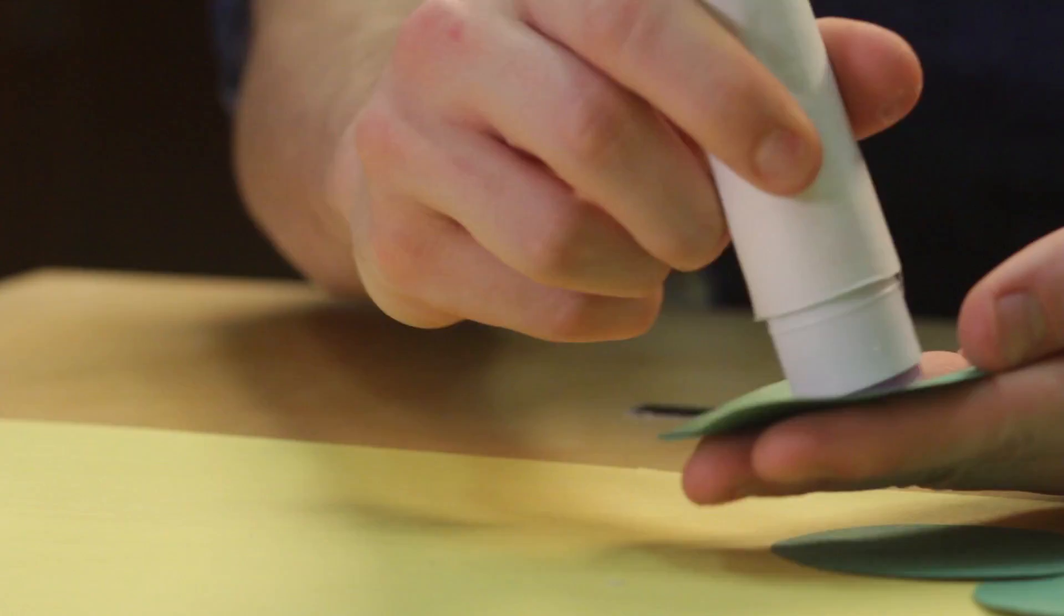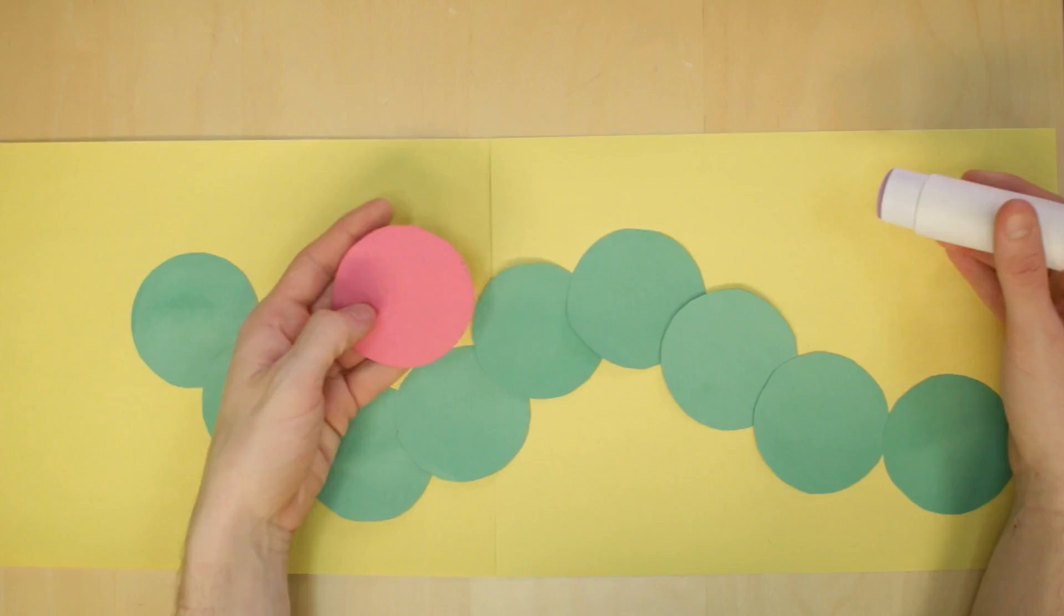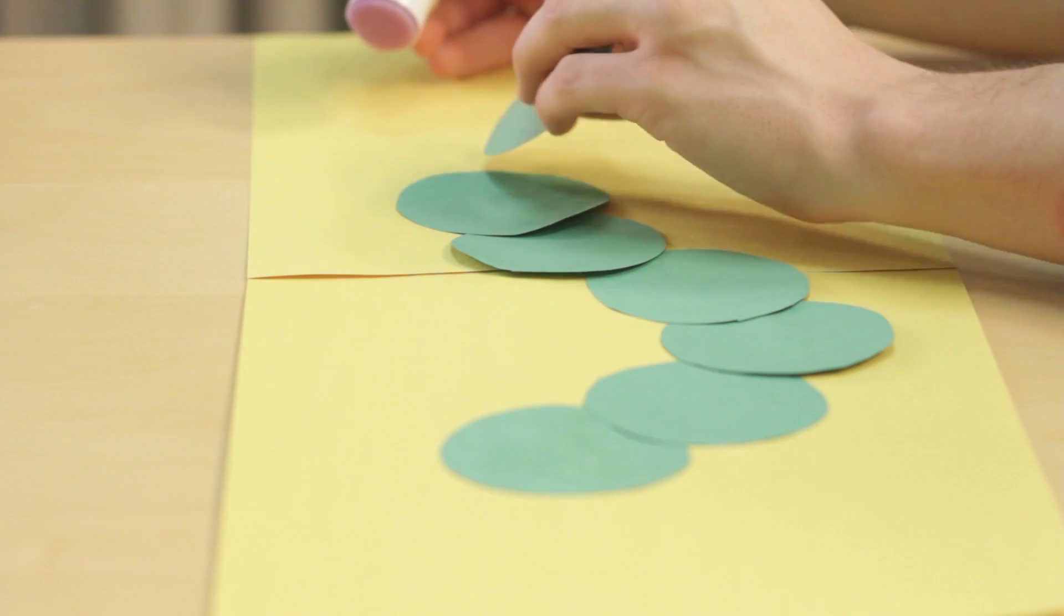Once you've read The Hungry Little Caterpillar, have the kids cut out circles. With the circles cut, have them laid down in the shape of the caterpillar, and go ahead and insert some math by counting the circles as you go.